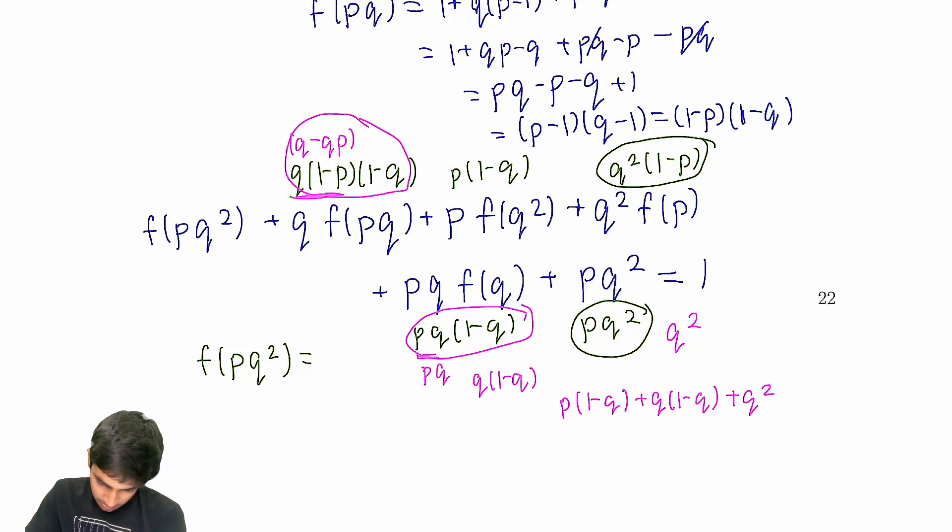And then finally, we have this p(1-q) term. So, at the end, we're just left with p(1-q) plus q(1-q) plus q². Yeah, that should... That should be good, I believe. Mm-hmm. Yeah, because then these two things add to q(1-q). These two things add to q², and then we have this p minus pq term that is left.